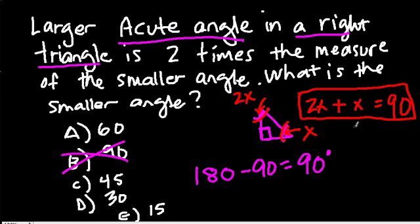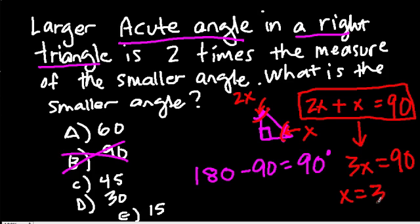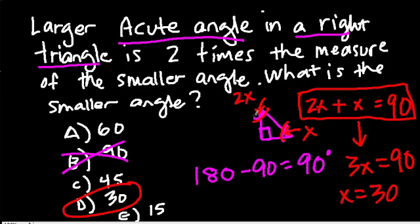If we add X and 2X, we get 3X. That equals 90. Divide both sides by 3, and X equals 30. Be careful here, because sometimes they might ask for the measure of the larger of the two angles and put 30 as a choice. But then your answer would be 60, because the larger acute angle is double the smaller angle.